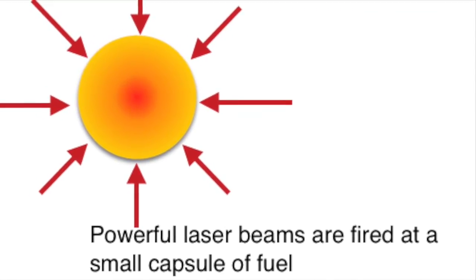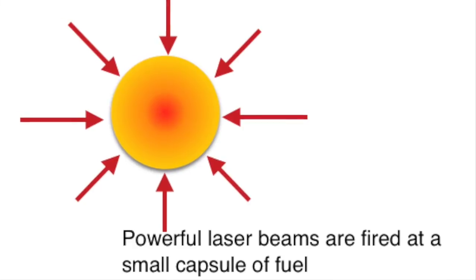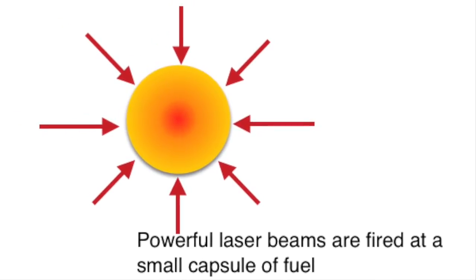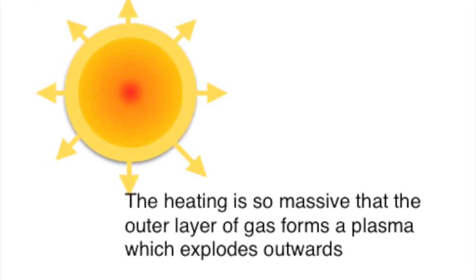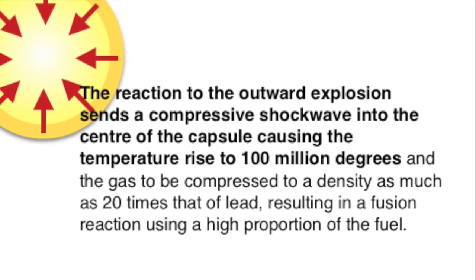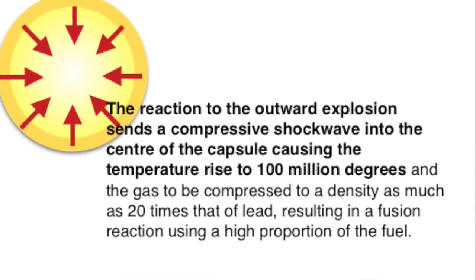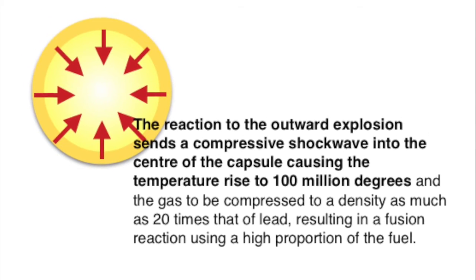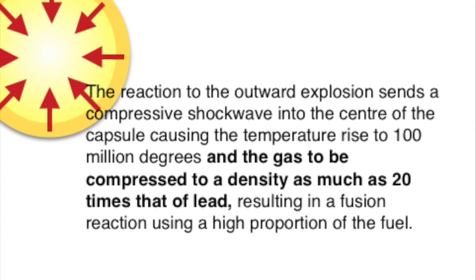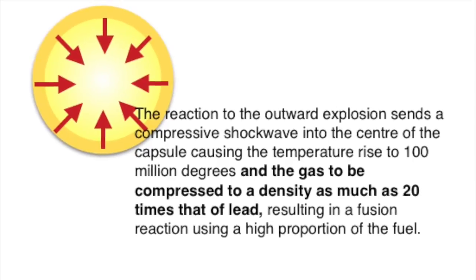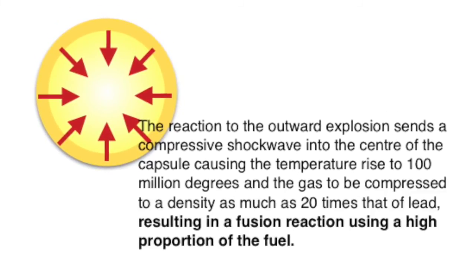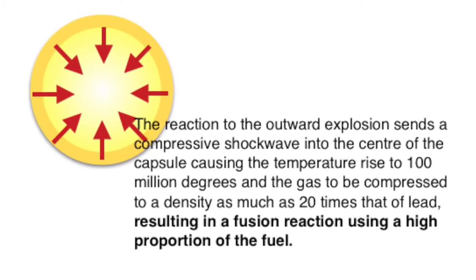Using a completely different approach, the largest inertial confinement fusion project runs in the US. This project uses powerful laser beams. These are fired at a small capsule of fuel, something like deuterium. The heating of that fuel is so massive that the outer layer of gas forms a plasma which explodes outwards. That outward explosion leads to reaction, a compressive shock wave that goes down into the centre of the capsule, causing the temperature in there to rise to as much as 100 million degrees. And for the pressure to rise so far that the density of the material is 20 times that of lead. That results in a fusion reaction which uses a high proportion, but not all of the fuel.